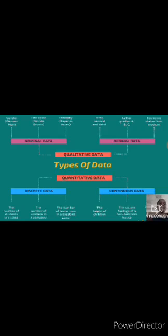Next, we are going to see the types of data. Basically, there are two types: qualitative data and quantitative data. In qualitative data, we have two options: nominal data and ordinal data. Likewise, in quantitative data, discrete data and continuous data.